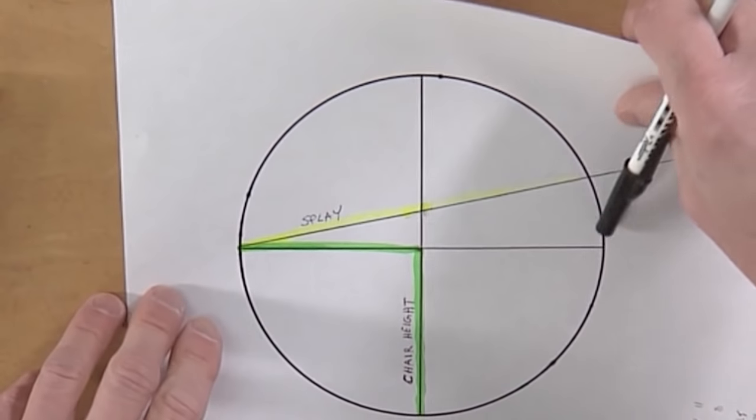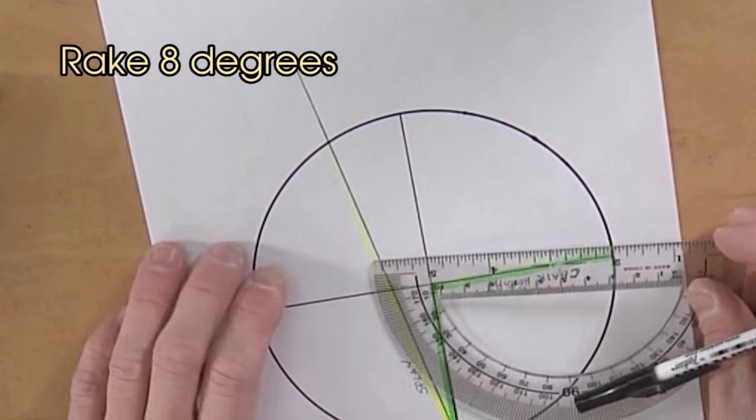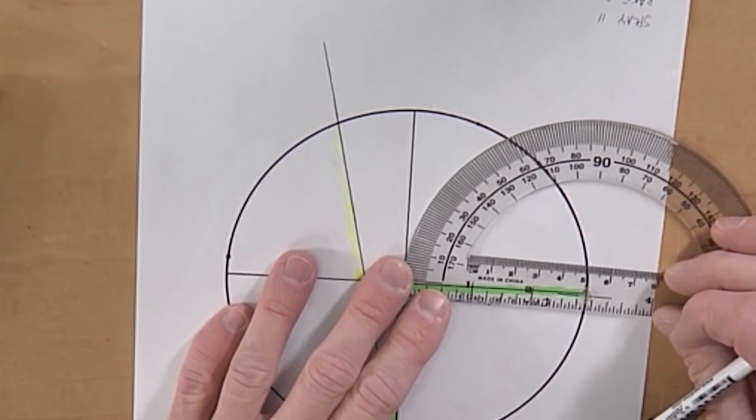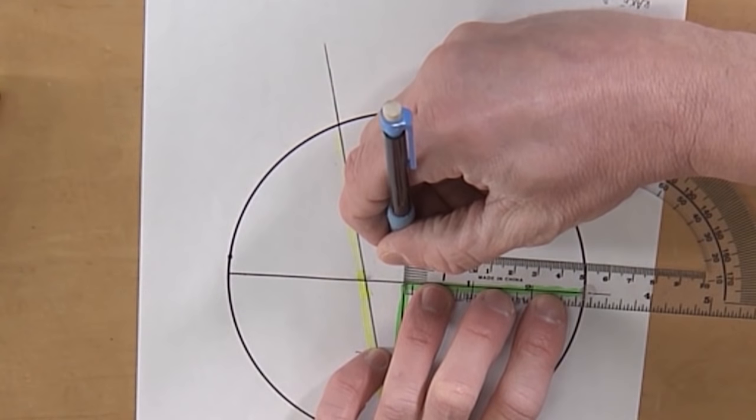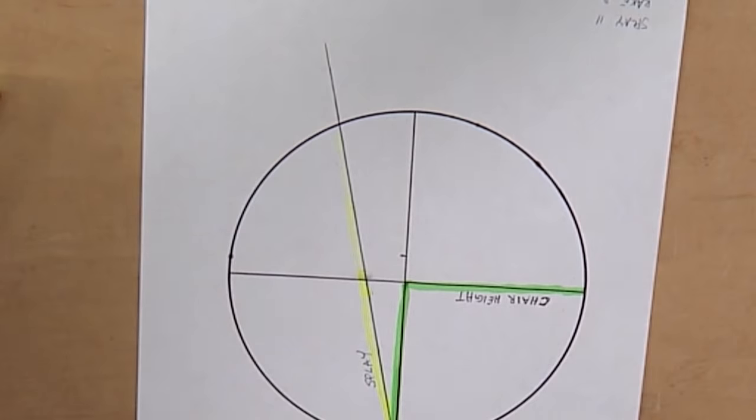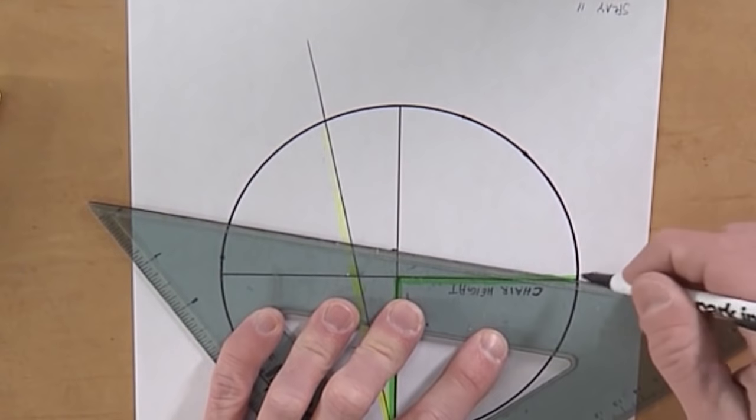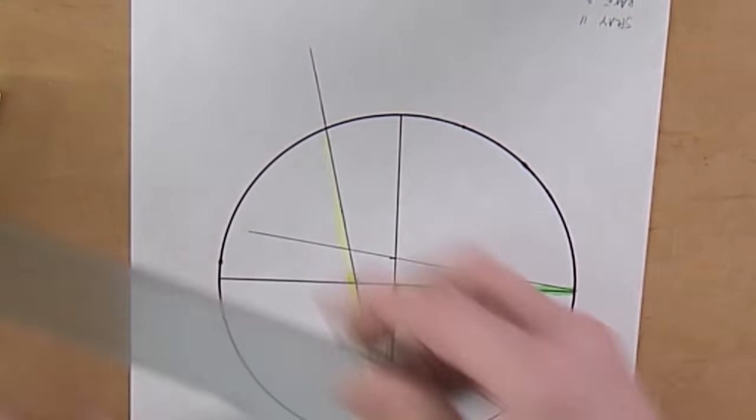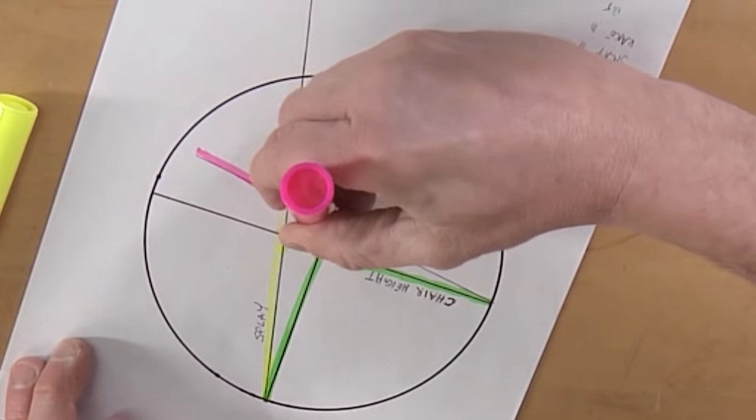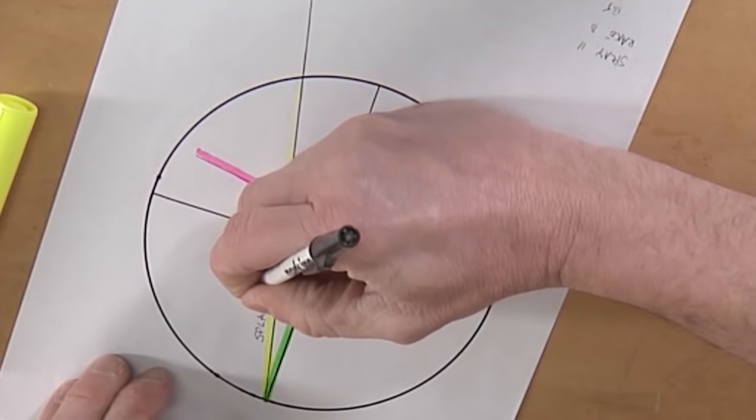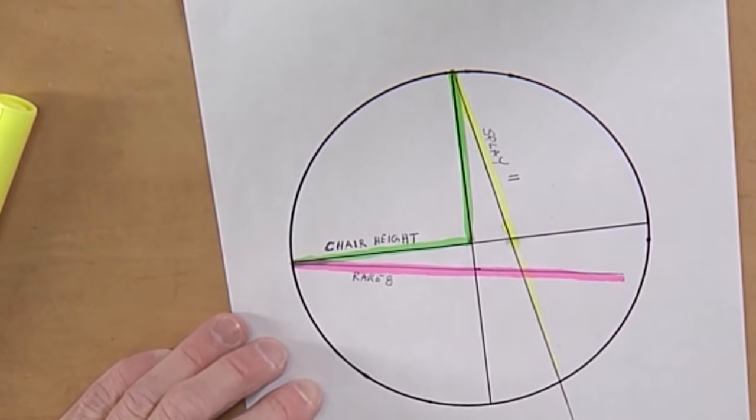I said my rake angle was at 8 degrees. So I'll put this on here again. Again, I'll draw my line. Let's color code this one pink.